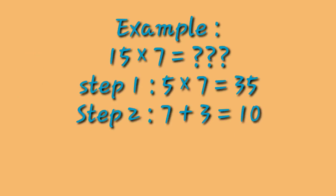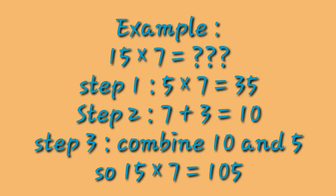Let us understand with an example — suppose you want to find out 15 times 7. First, multiply 5 by 7: 5 sevens are 35. In step 2, add the multiplier 7 with the tens digit of 35, which is 3: 7 plus 3 equals 10. In step 3, combine 10 with the 5 from 35, and you get the answer 105. So 15 times 7 equals 105. You can take more examples for practice so that all the concepts will be clear to you.